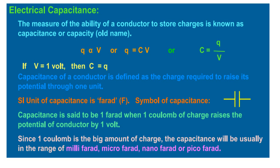1 millifarad will be 1 into 10 to the power minus 3 Farad. 1 microfarad will be 1 into 10 to the power minus 6 Farad. 1 nanofarad will be 1 into 10 to the power minus 9 Farad. 1 picofarad will be 1 into 10 to the power minus 12 Farad.